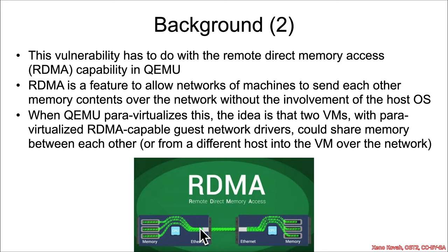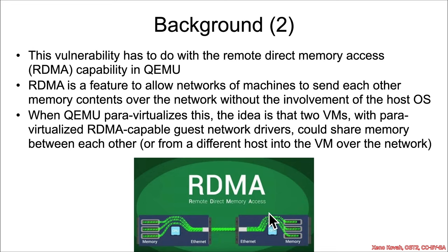RDMA gives network cards the capability to do direct memory access between systems. In QEMU, this is para-virtualized — the idea being that two VMs could act as if they were two hosts and RDMA between each other.